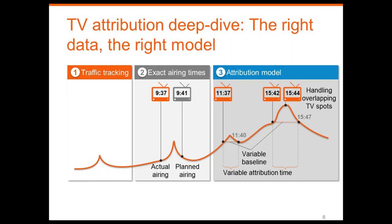Then we need the attribution model. We need a variable baseline because traffic is not stable — it fluctuates and varies a lot during the day. Early in the morning you'll have low traffic generally, that will rise throughout the day, and depending on your vertical, it will die down as the evening progresses and people go to bed.